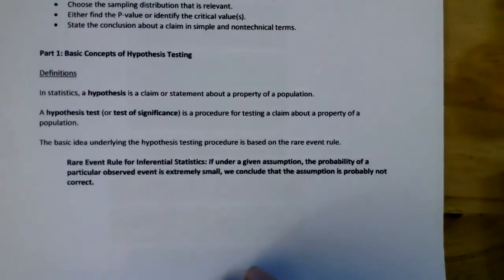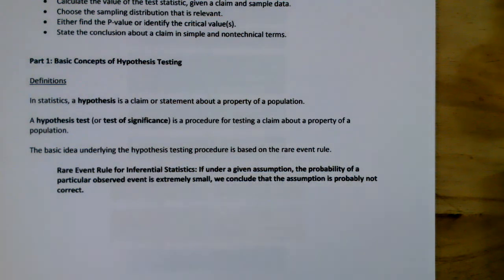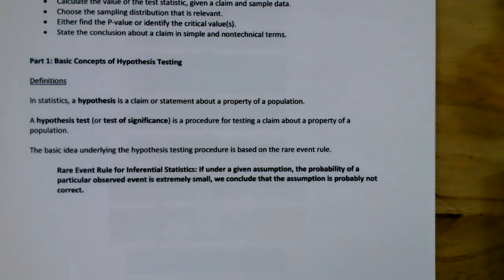We're going to present the general components of a formal hypothesis test. The bullet points we will focus on: identifying the null and alternative hypothesis from a given claim and expressing both in symbolic form; calculating the value of the test statistic given a claim and sample data; calculating the relevant sampling distribution. In statistics, a hypothesis is a claim or a statement about a property of a population — for example, the proportion of students who smoke is approximately 0.46. That would be a hypothesis.